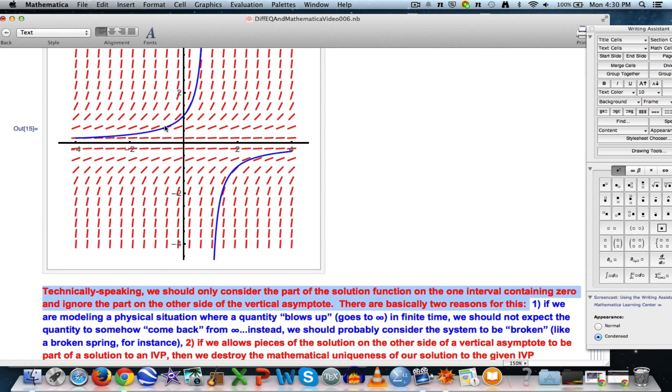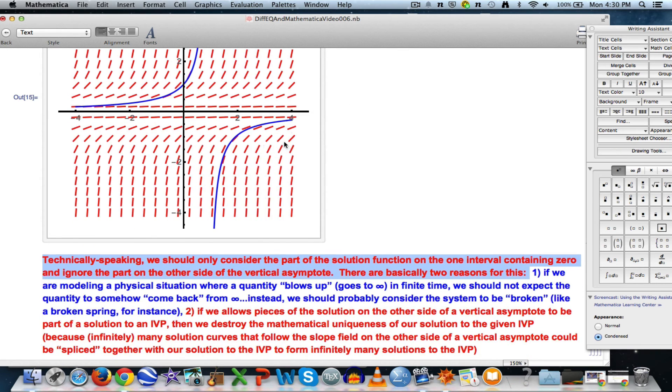meaning this interval over here, not this interval over here, and ignore this part of the graph that's on the other side of the vertical asymptote. Why? Why should you ignore that other part? There are basically two reasons for this that I want to just briefly mention. First of all, there's a physical reason. If this is a model of a physical situation where y, in this case, is going off to infinity in finite time, it's blowing up,